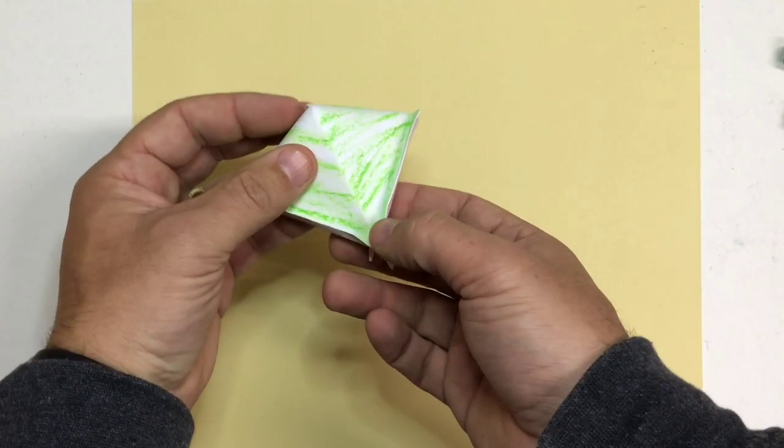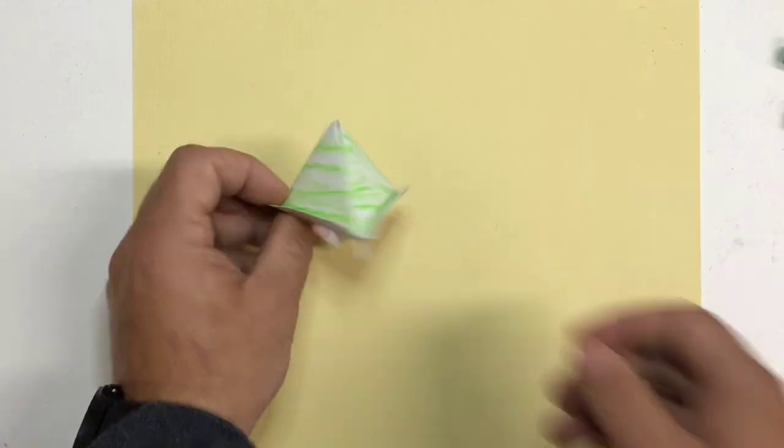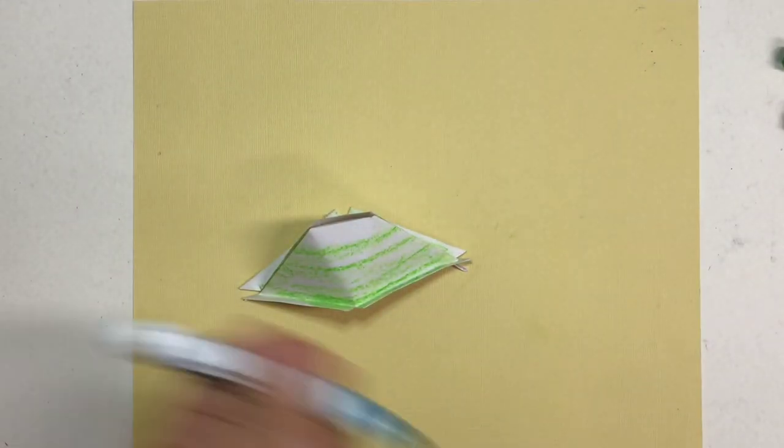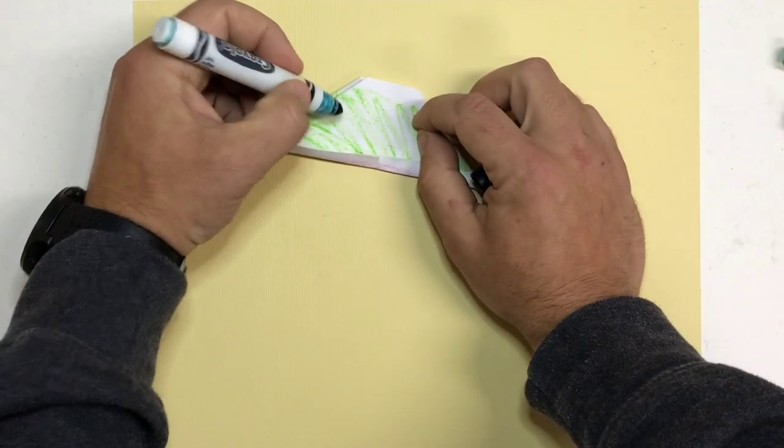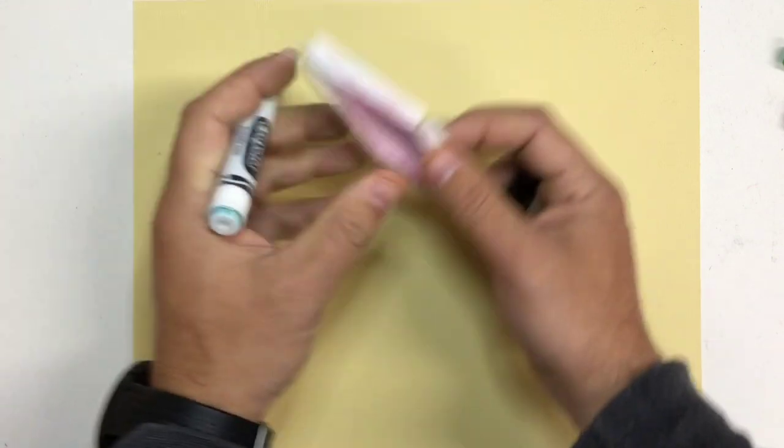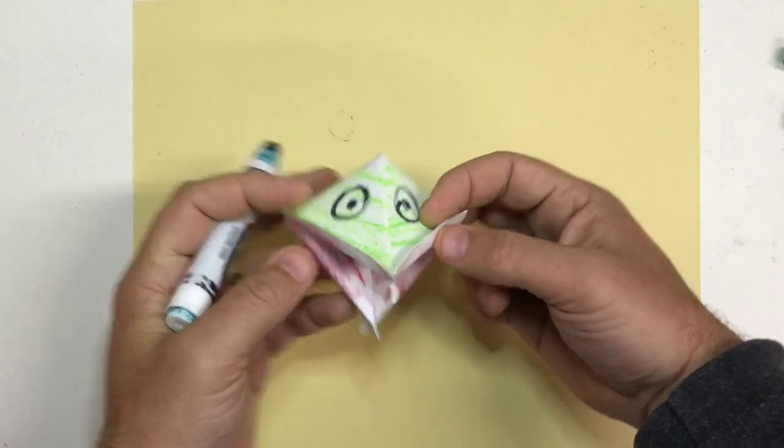Once you're finished, you can add eyes or something else. Let me see if I can do that. I'll put an eyeball here. Flip it over. And an eyeball there. Oh yeah. That looks great.